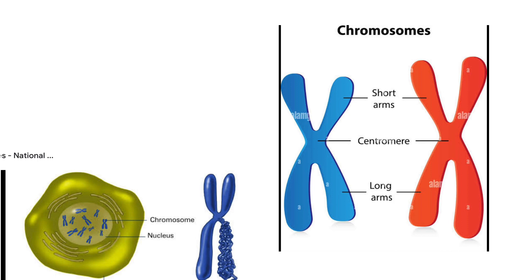In other words, chromosomes are formed to facilitate cell division. A cell can divide equally only by the formation of chromosomes. These two strands of chromosomes are called sister chromatids, joined at the center at a point called the centromere.